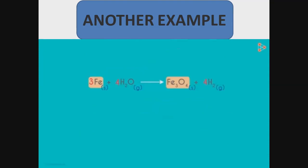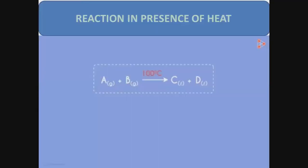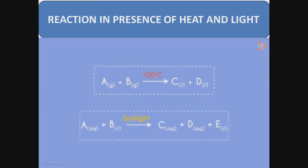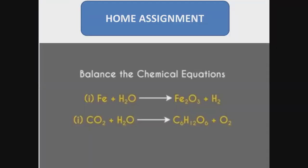If we write the full reaction with states: solid iron (s) reacts with steam H2O (g) to give Fe3O4 (s) and H2 gas (g). If a reaction occurs in the presence of heat or light, we write the condition — such as heat or light — on top of the arrow to represent the reaction conditions.